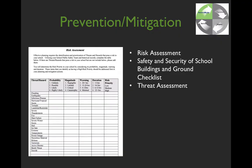Prevention and mitigation is the section where you're doing things before something happens to maybe prevent an event. We have a risk assessment, a safety and security of school buildings and grounds checklist, as well as the threat assessment which was added to the guide last year. This risk assessment document has been modified significantly. Previously, the school crisis guide decided your risk for you. This document, consistent with federal guidance, allows you to analyze your risk to particular threats and hazards, and items you identify as high priority should get your attention first when planning or exercising.